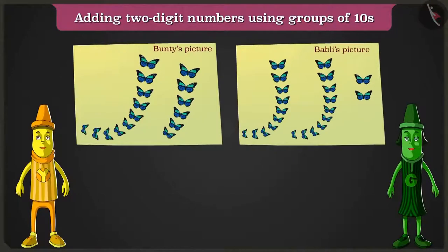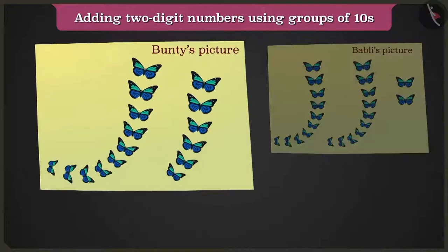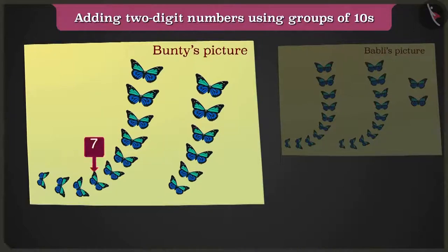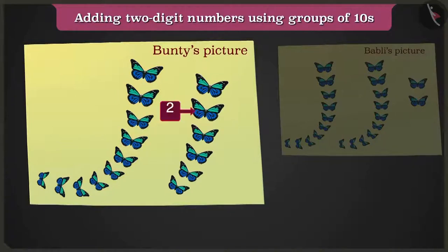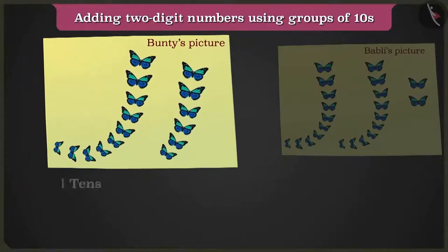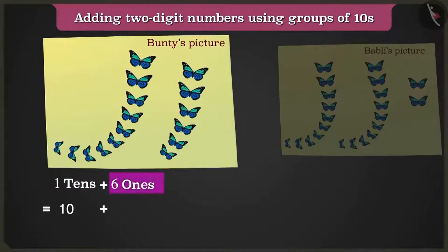Hey Yellow, look at this picture of butterflies. Here on Bunty's drawing paper, there are one, two, three, four, five, six, seven, eight, nine and ten — here is a group of ten. And another one, two, three, four, five and six butterflies. Bunty has made one ten that is ten and six ones that are six. So ten plus six are sixteen butterflies.